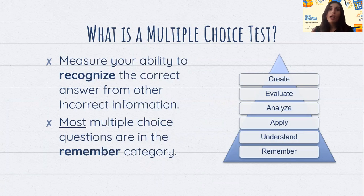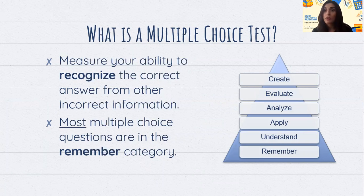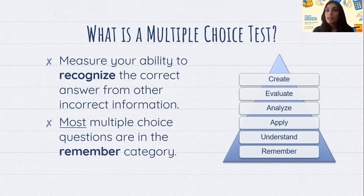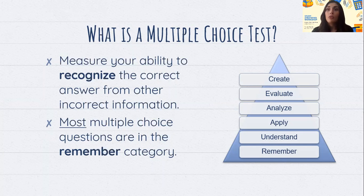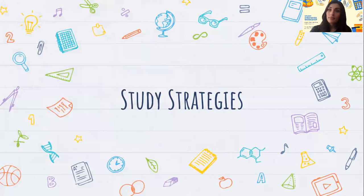If you watched the test-taking workshop earlier, you'll recognize this pyramid on the right. A multiple choice test measures your ability to recognize the correct answer from other incorrect choices. Most multiple choice questions simply ask you to remember, recognize, or recall information. This pyramid is called Bloom's Taxonomy — you start from the bottom and work up to higher-level learning. Most multiple choice questions fall in the lower-level category of 'remember.'